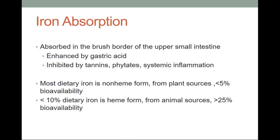Coming to iron absorption: iron is absorbed mainly in the duodenum and the proximal brush border of the upper small intestine. Absorption is enhanced by gastric acid. Iron absorption can be hindered by tannins — mainly tea and beverages — and phytates, mainly from bran, cereals, and grains. All this can interfere with iron absorption. Any systemic inflammation in the body also affects iron absorption.